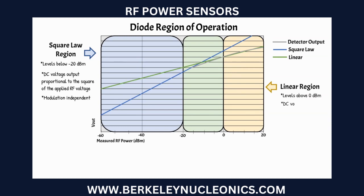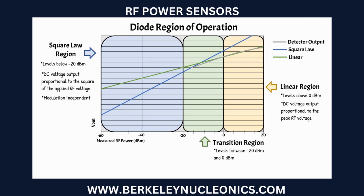The linear region is found at levels above 0 dBm, where the DC voltage output is proportional to the peak RF voltage. The transition region of a diode sensor is at levels between -20 dBm and 0 dBm. Diode behavior must be meticulously characterized within this region to produce accurate power measurements.